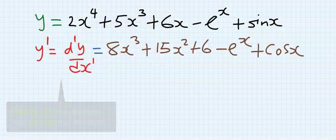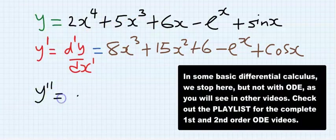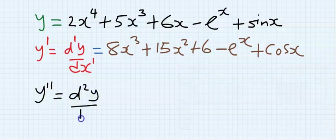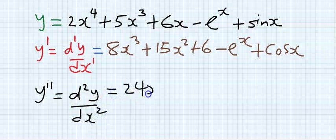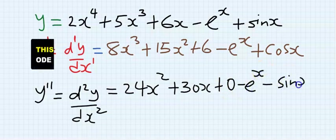If I differentiate this again a second time, it is going to be d²y/dx², which is 24x to the power of 2 plus 30x, plus zero, minus e^x, minus sin x. This is a second order differential equation of the first degree.